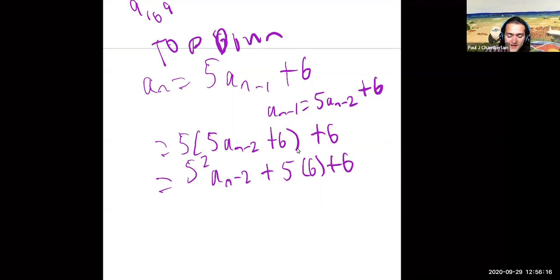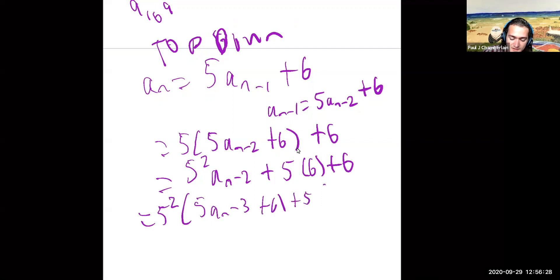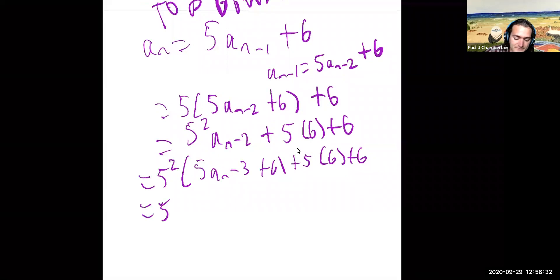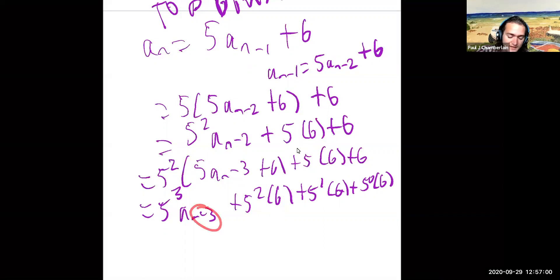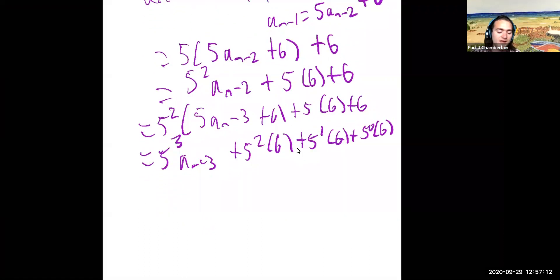Making another substitution, 5 squared times a_{n-2} becomes 5 times (a_{n-3} plus 6), and I also have the plus 5 times 6 plus 6. Rewriting, that's 5 cubed a_{n-3} plus 5 squared times 6 plus 5 to the first times 6 plus 5 to the 0 times 6. It's helpful to leave it in this expanded form so I can see the pattern: I have n minus 3 in the subscript, a 3 in the exponent, and powers 2, 1, 0 in the remaining terms.